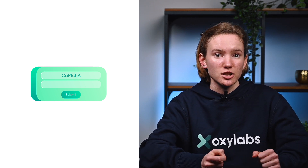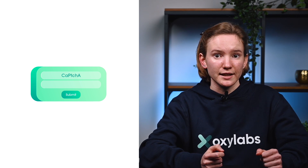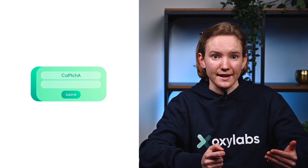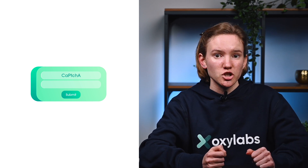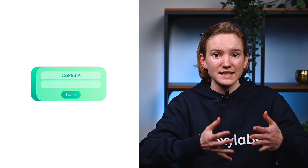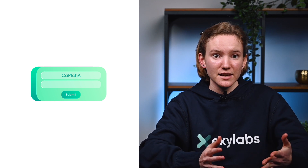Some common CAPTCHA types stretch and distort letters or numbers and ask users to identify the text. Other types of CAPTCHA present different images to users. The database of CAPTCHAs is massive in order to suggest as many different variations as possible.